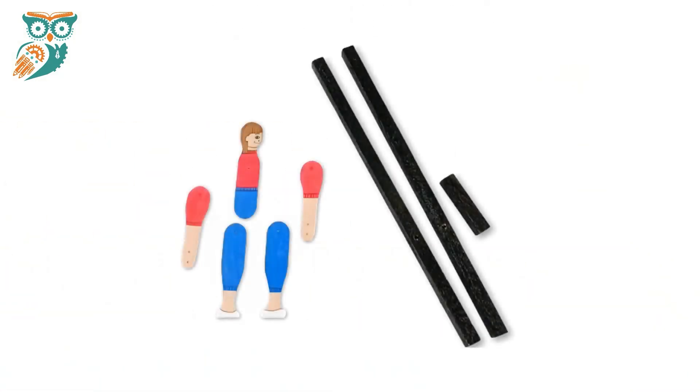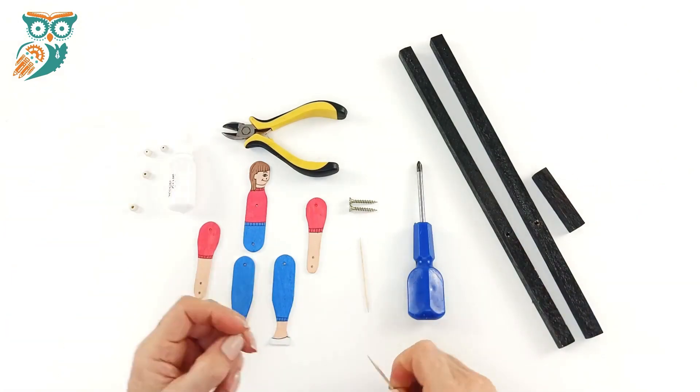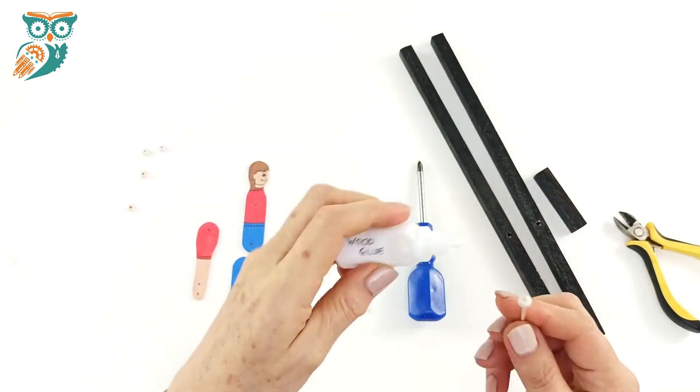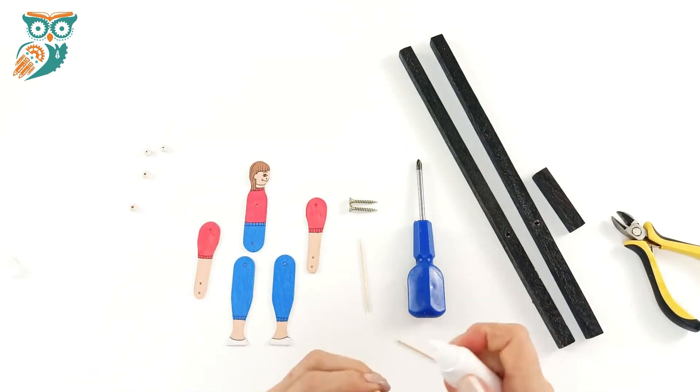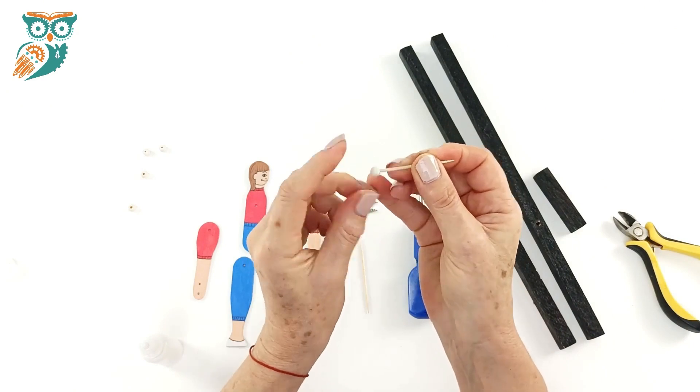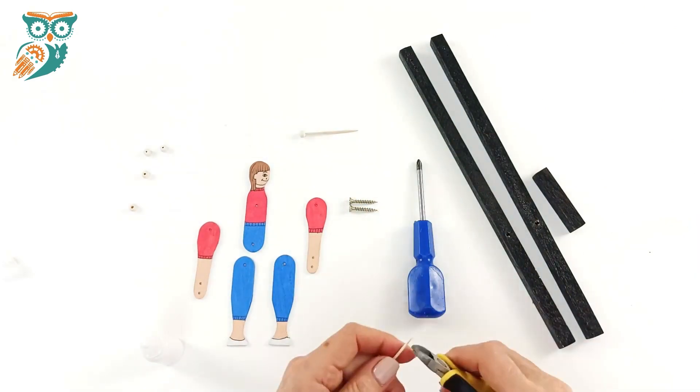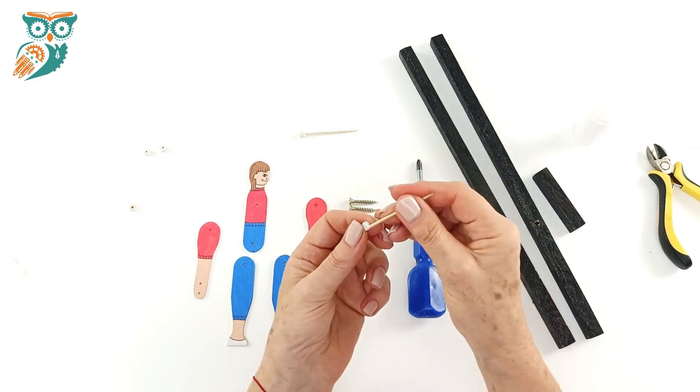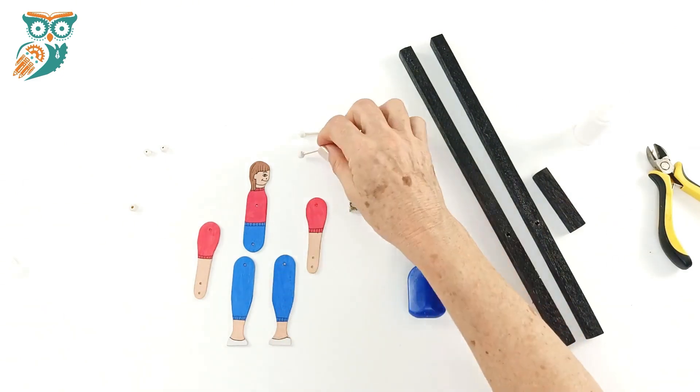We're going to go ahead and paint each of our pieces to make them look cool and your kids can get really creative with that. Then we're going to use some wood beads and a toothpick. We're going to add the wood bead and glue it onto the toothpick, and we're going to do that for two toothpicks because we need these to be our hinge points for the hips and shoulders of our acrobat.